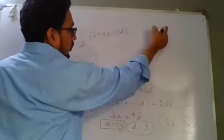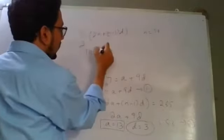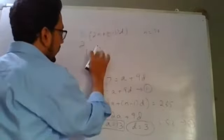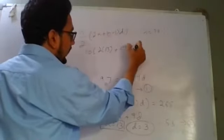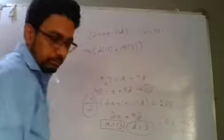Where N is equal to 20, so this becomes 10. 2A is 26. Plus N minus 1, 19, into D, 3. So the sum of the first 20 terms is coming 830.